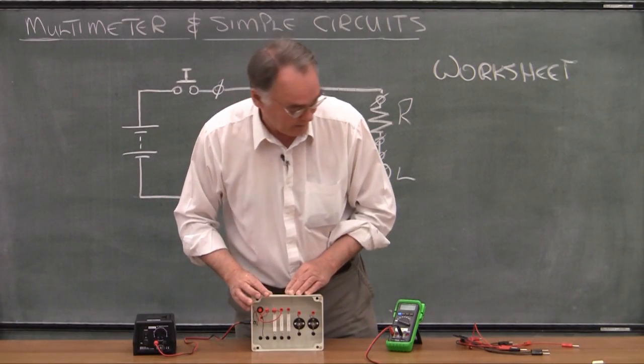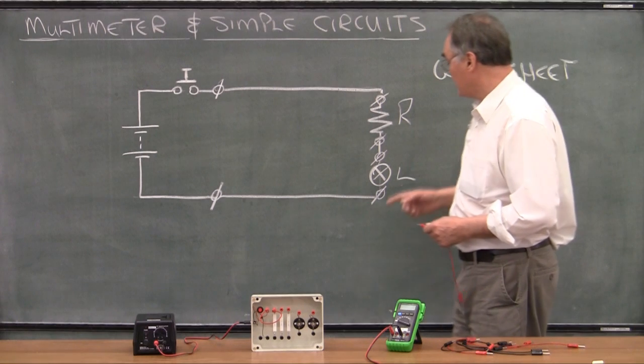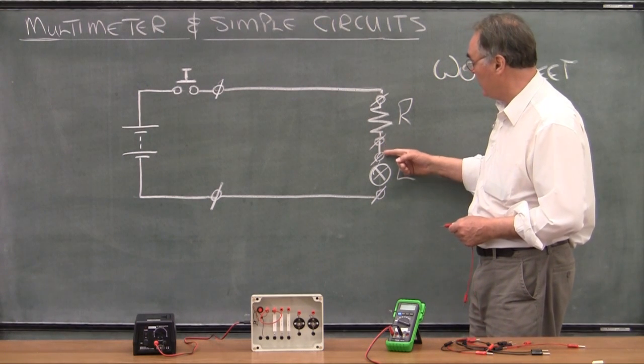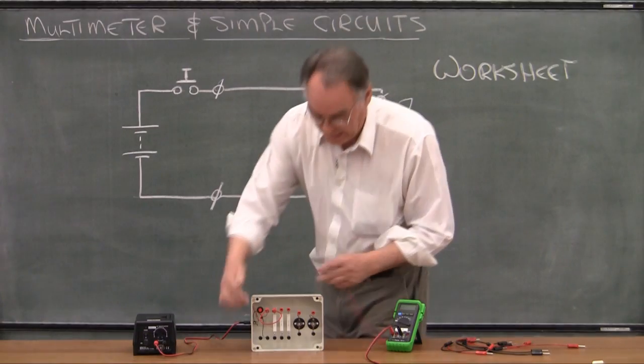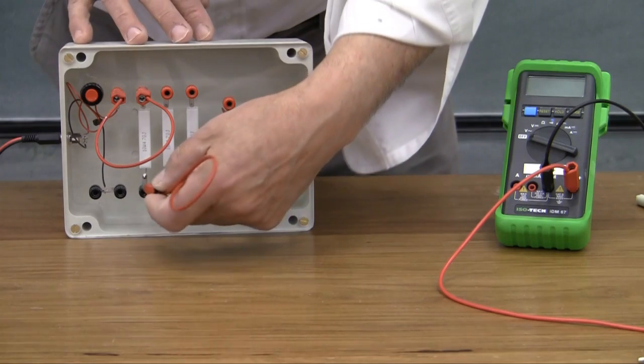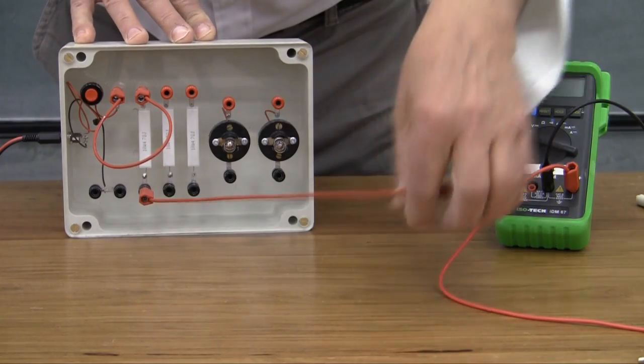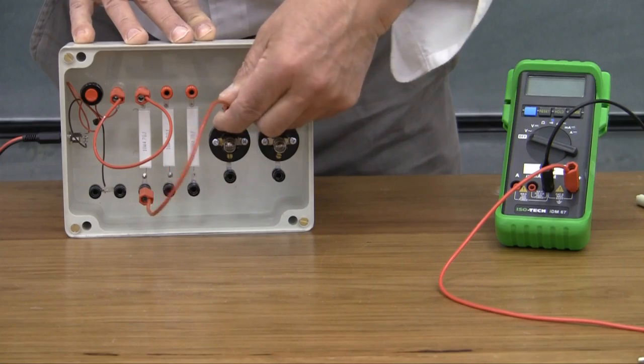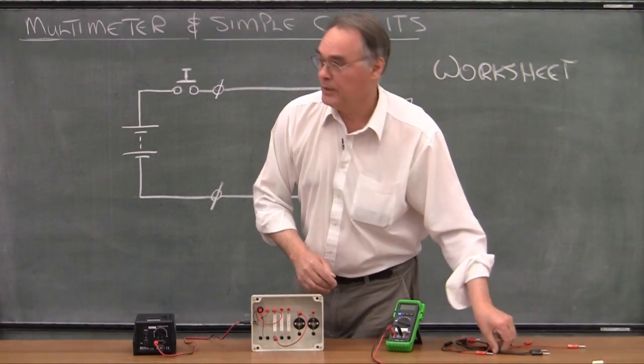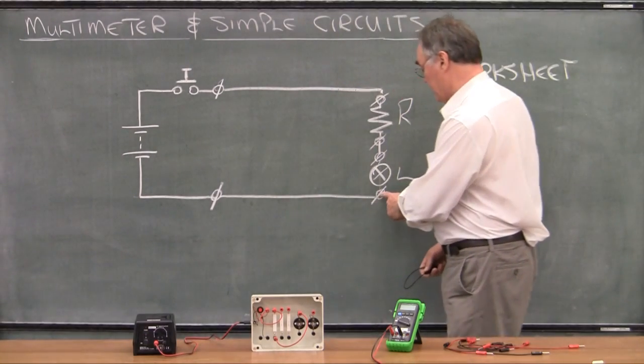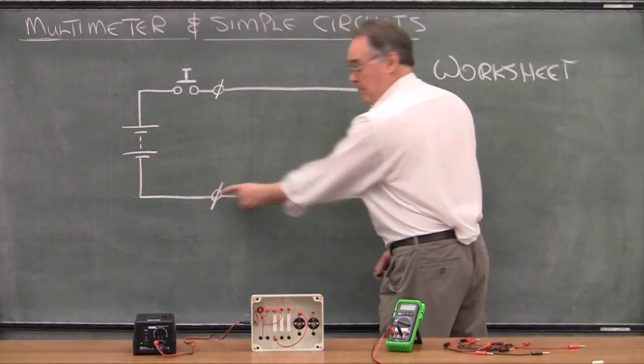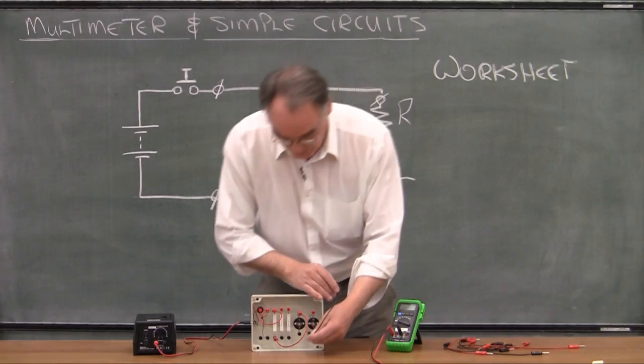Now I'm going to install the second piece of wire between the resistor and one side of the lamp, connecting to the other side of that resistor. Once again, any of the two lamps, it doesn't matter which one. Finally, I put in this last piece of wire from the other side of the lamp back to the power supply.